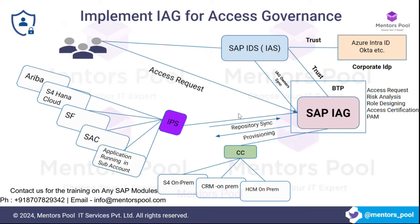So we thought: why not have an access governance system? We can integrate all these applications with the Identity Access Governance application. If someone wants access to any of these applications, they get a form where they can raise an access request. Because this governance application is integrated and knows what roles are available and who owns those roles, the request goes through an approval workflow — and as soon as the approver grants it, IEG provisions the user automatically.